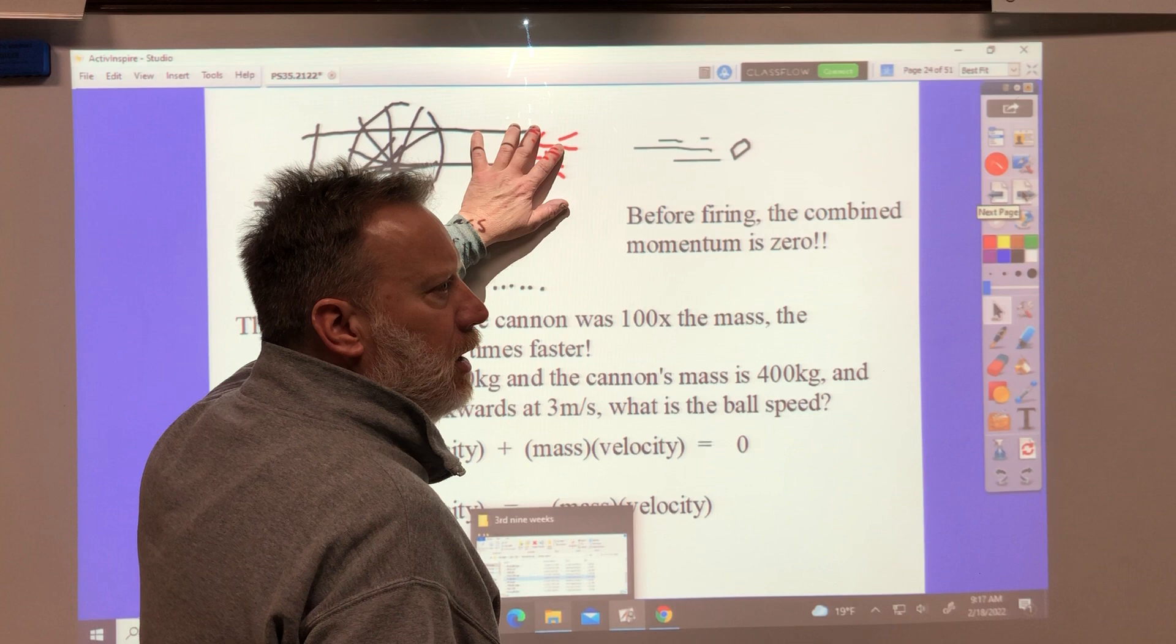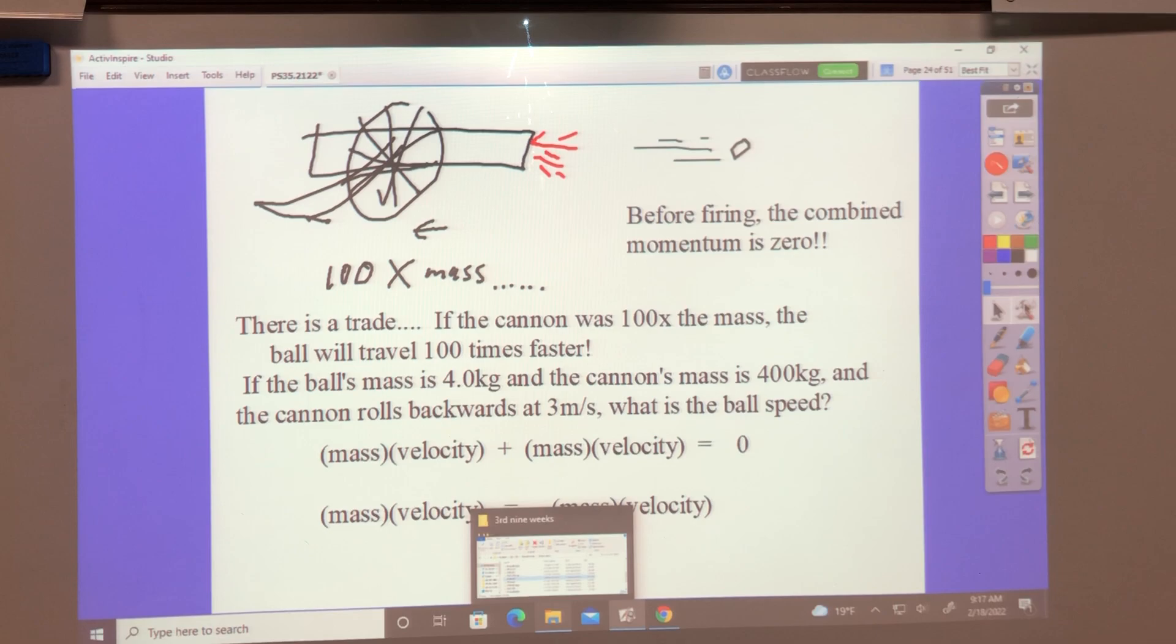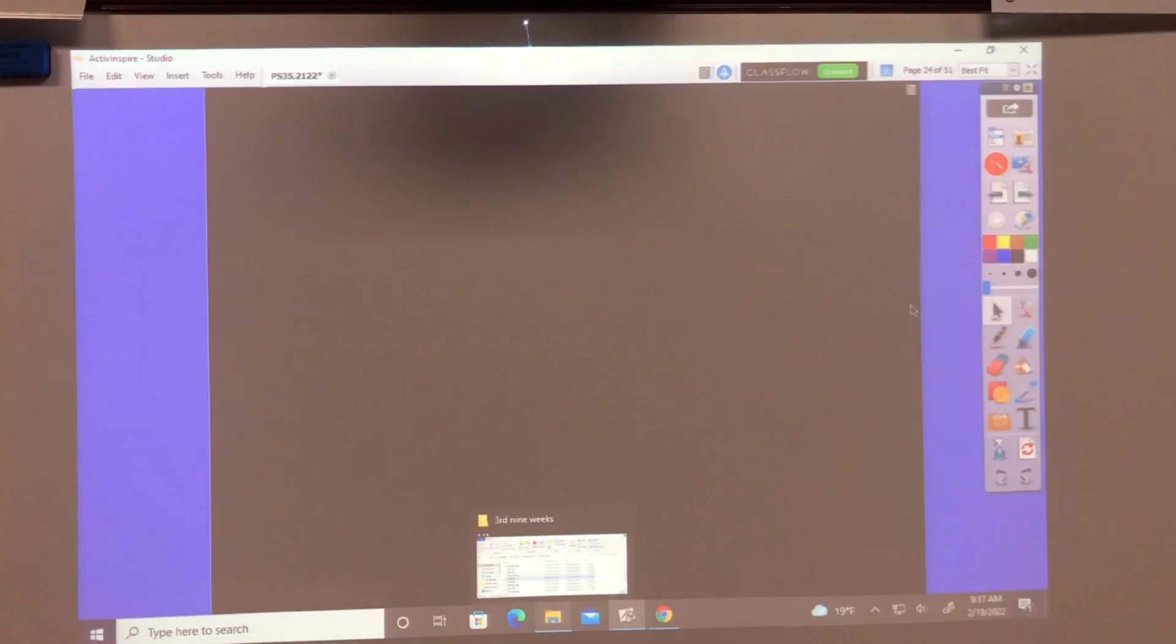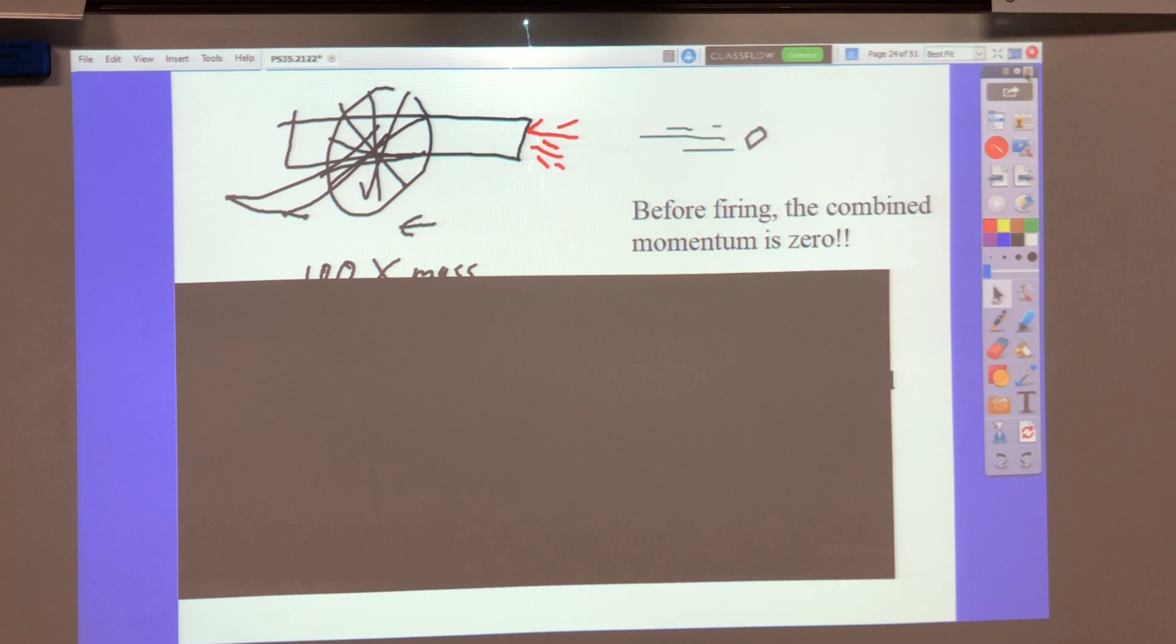Now that's what makes the cannon or a gun recoil, go back the other way. Not as fast. But if you've ever shot a gun, you know it has recoil.